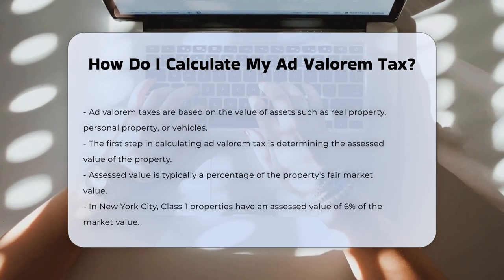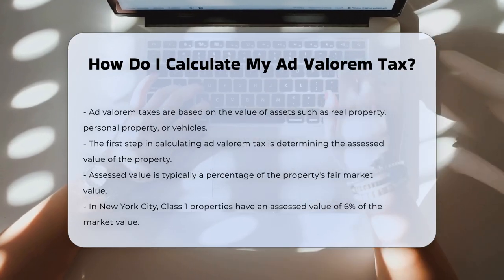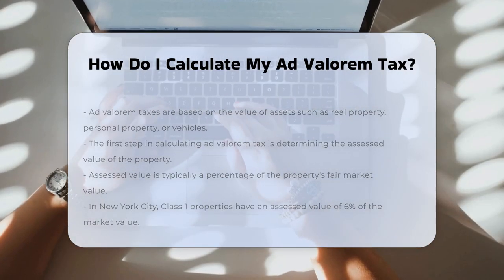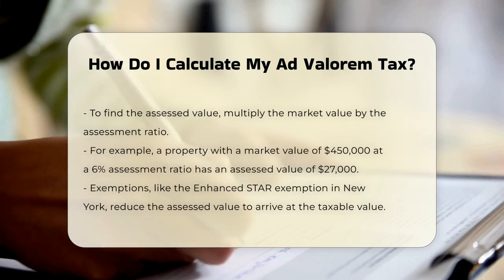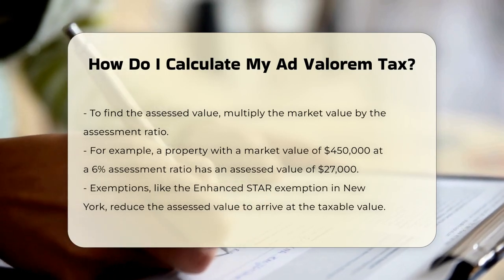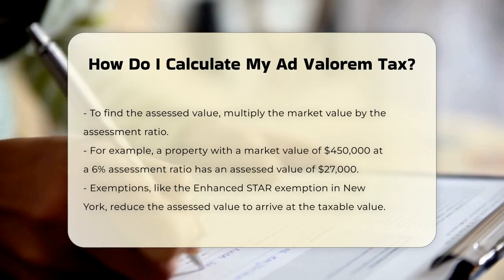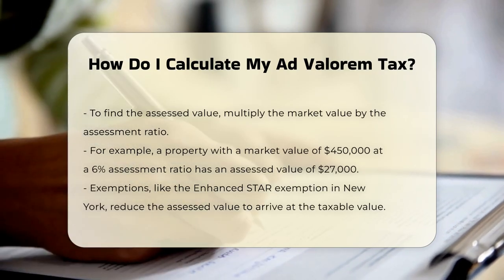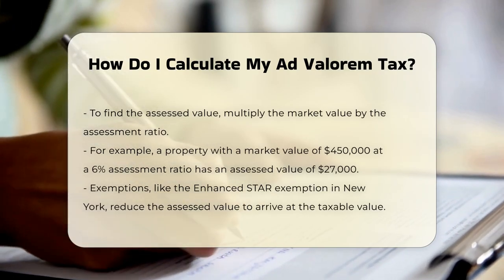Step two: Calculating the assessed value. To calculate the assessed value, you multiply the market value of the property by the assessment ratio. For instance, if a property has a market value of $450,000 and the assessment ratio is 6%, the assessed value would be $27,000.